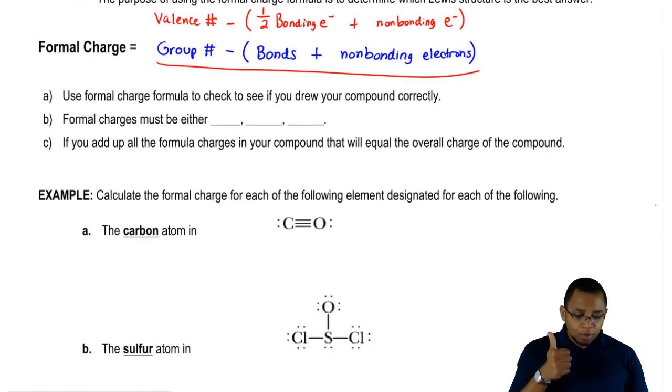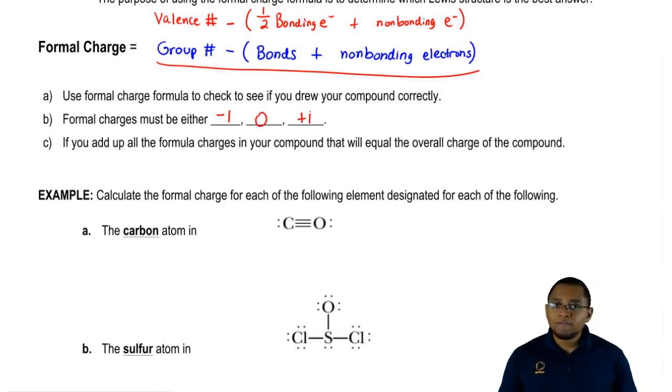We use the formal charge formula to check if we drew the compound correctly. When you do formal charge, you're only able to get three possible answers: minus 1, 0, or plus 1. If you get a formal charge that's not one of those three numbers, that's a strong indication that you drew the compound incorrectly.